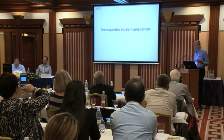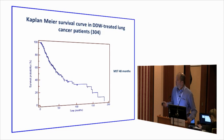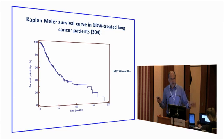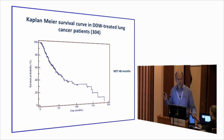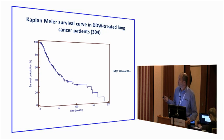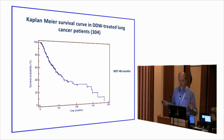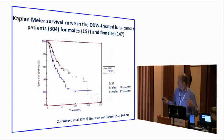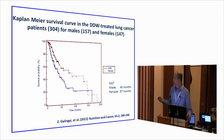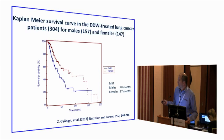For lung cancer, without any selection — small cell, non-small cell, brain metastasis included — we had 304 lung cancer patients, and the median survival time was 48 months. The historical control is approximately 8–10 months. Breaking it down by gender: for women, we found 87 months; for men, 40 months.